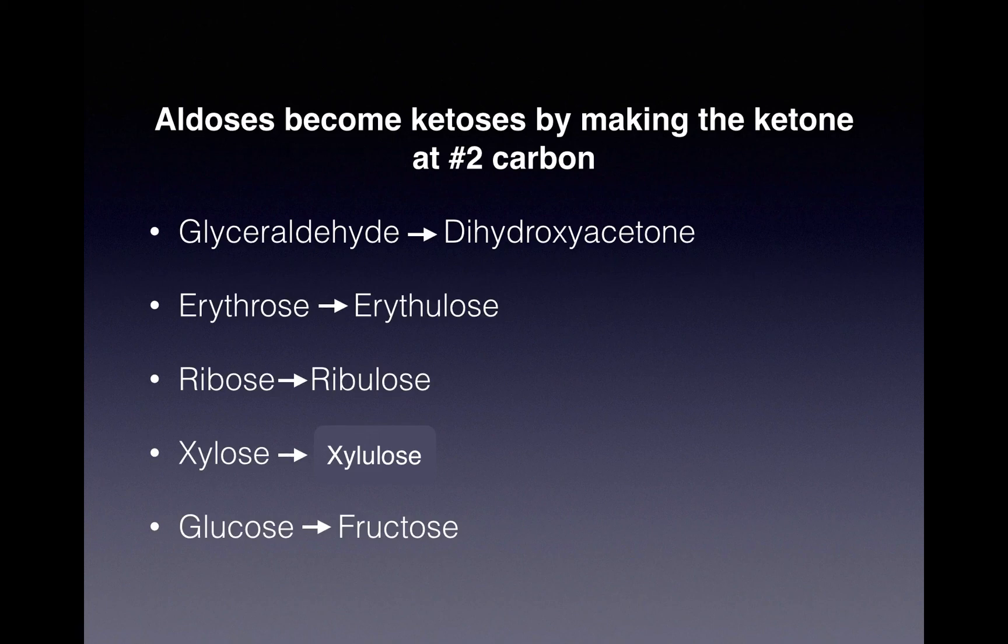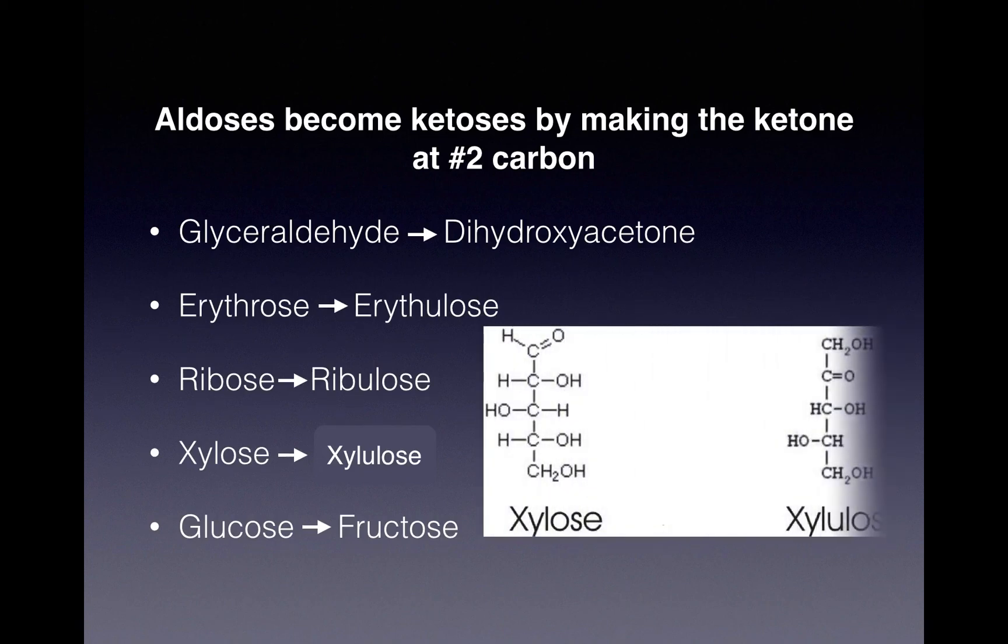To look at an example, let's look at xylose. Xylose becomes xylulose. Notice, aldoses become ketoses by making the ketone at carbon number two.